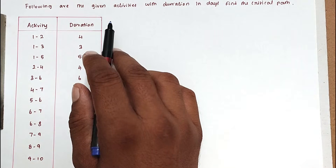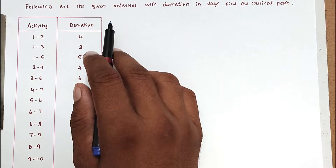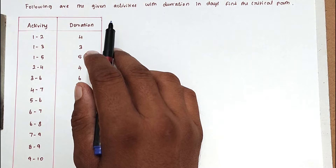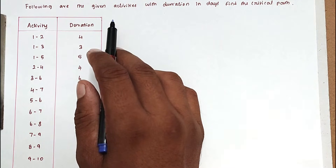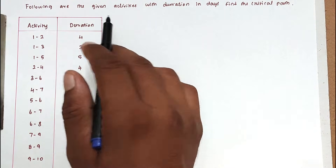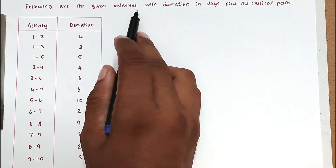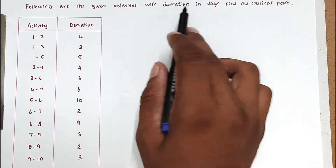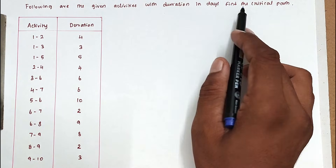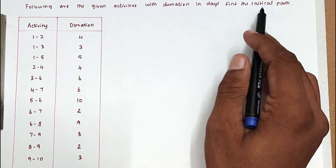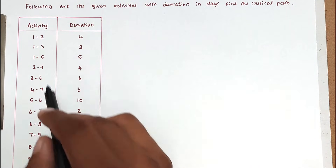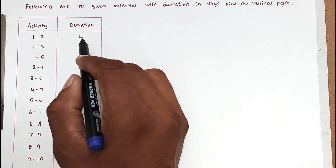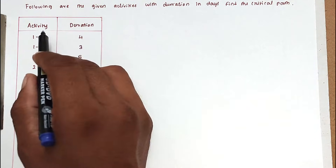Hello friends, welcome to Civil Engineering Exam. Today we are going to see a problem related with construction planning and scheduling in the topic of Critical Path Method. The question gives a list of activities with their duration in days, and we need to find the critical path.